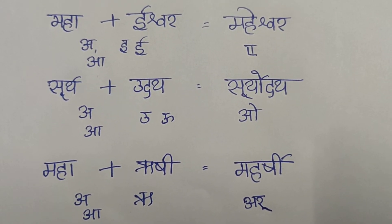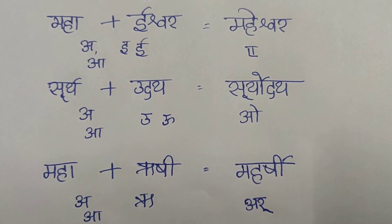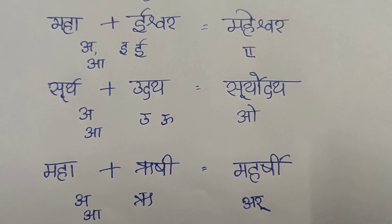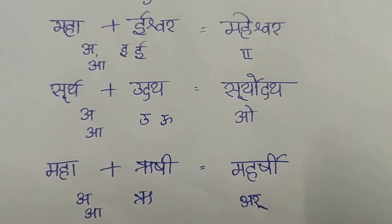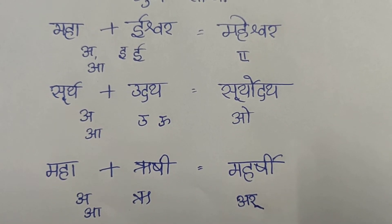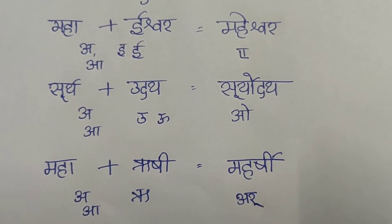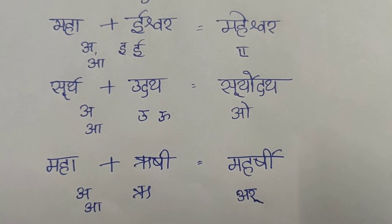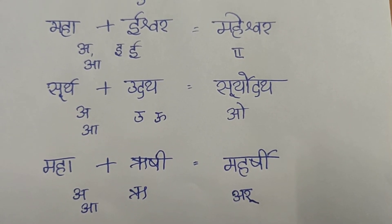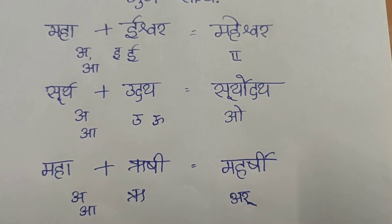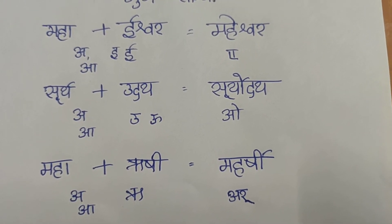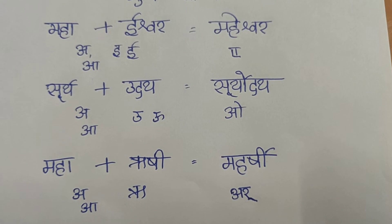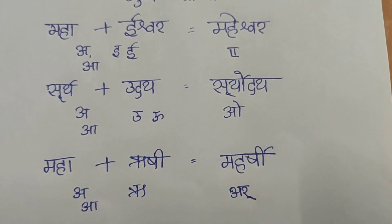Maha plus Ishwaraha becomes Maheshwara. Here, the first word ends with A and the second word Ishwara starts with E. A plus E becomes E, so the result is Maheshwara. Same way, if the first word ends with A and the second word starts with E, the result would also be E. The example would be Sura plus Indra giving Surendra. This is the first variation.